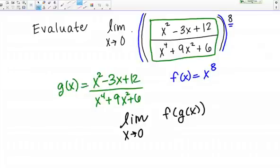Let's look at the denominator here. I've got X to the 4th plus 9X squared plus 6. Is that ever going to be 0? No it's not. This rational function is continuous for all values of X.